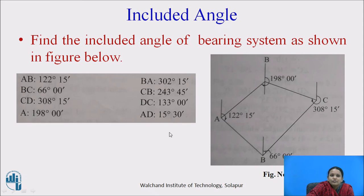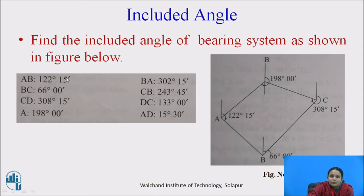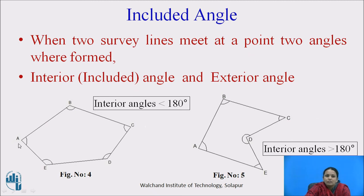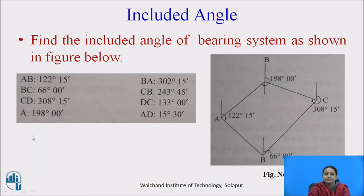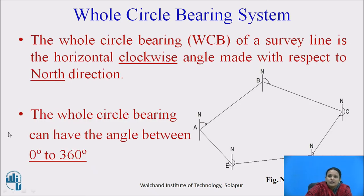You can pause this video and find the included angles of this bearing system as shown in the figure. In this figure, the fore bearings of all the survey lines A, B, C, and D are shown, along with the back bearings of the respective survey lines. You can find the included angles depending upon the fore bearing and back bearing of each survey line. Now, there are two types of bearing systems: the whole circle bearing system and the quadrantal bearing system.